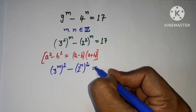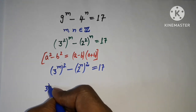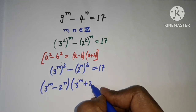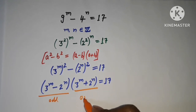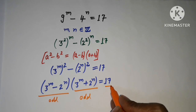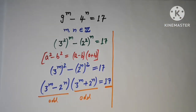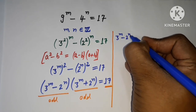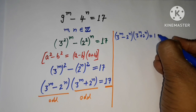That gives us 17. So I'm going to use this formula. This becomes (3 to the power m minus 2 to the power n) times (3 to the power m plus 2 to the power n) equals 17. And 17 can be written as 1 times 17.